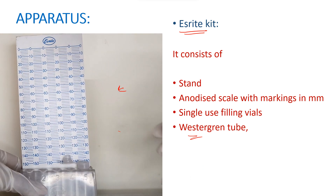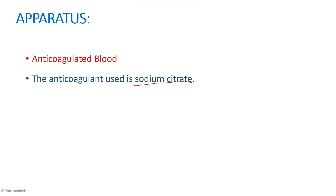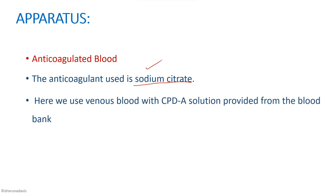For this experiment we need anticoagulated blood, and the anticoagulant that should be used is sodium citrate. For packed cell volume the anticoagulant used was ammonium oxalate and potassium oxalate in the ratio 3 to 2, but here we use sodium citrate. In practice, blood from the blood bank contains CPDA as the anticoagulant, though ideally sodium citrate should be used.